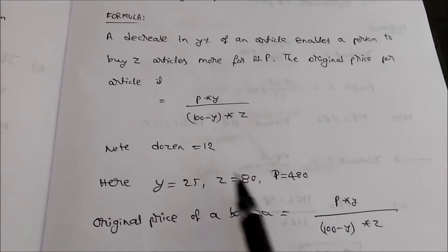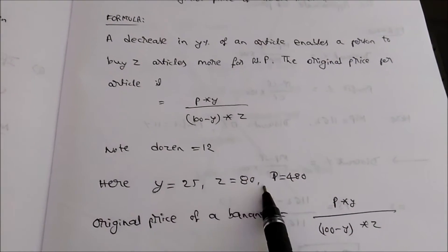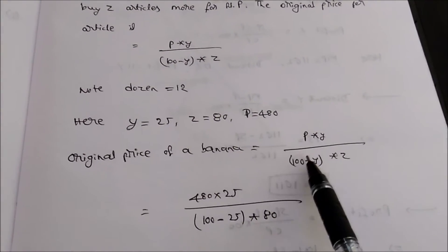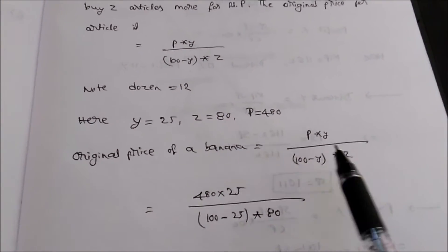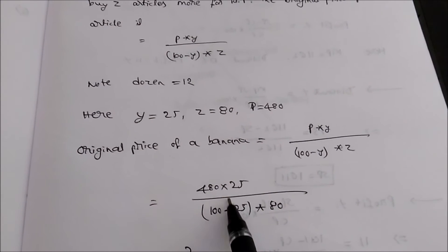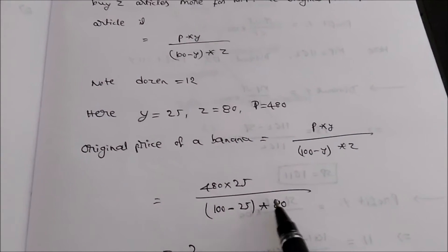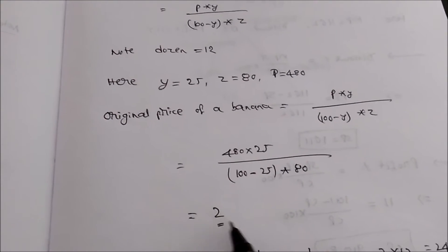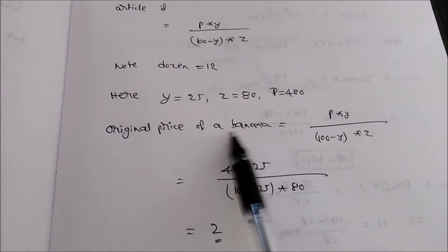Now we need to substitute all these values into the formula. Original price of banana equals p into y divided by (100 minus y) into z. That gives us 480 multiplied by 25, divided by (100 minus 25) multiplied by 80. When you solve this, you get the value 2. So the original price of one banana is 2 rupees.